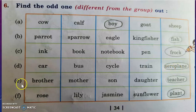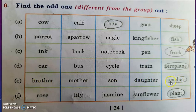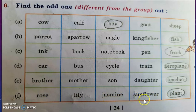Question E: brother, mother, son, daughter, teacher. Teacher is odd in this group because the others are all members of a family. Question F: rose, lily, jasmine, sunflower, plant. Rose, lily, jasmine, and sunflower are names of flowers, so plant is different and odd in this group — we have to circle it.